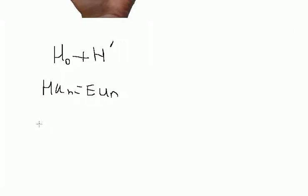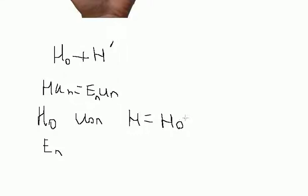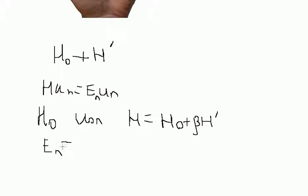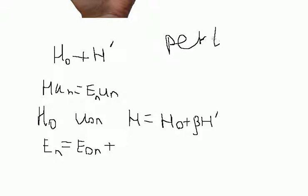We have built a theory where we know the unperturbed Hamiltonian H₀ and we have a set of wave functions for this Hamiltonian. For H₀ we have a known set of eigenfunctions. We represent the full Hamiltonian as H₀, whose solution we do know, plus a small factor βH', where H' is the perturbation. The energy levels in the zero-order case are the unperturbed energy levels, without any perturbation.